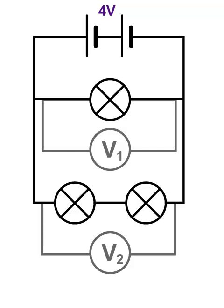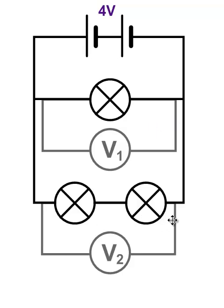We're going to have a look at potential difference in parallel circuits. This is a parallel circuit with two branches: a branch with one bulb and a branch with two bulbs. You'll see that there's also a couple of voltmeters attached in this circuit — a voltmeter measuring the potential difference across the middle branch and another one measuring the potential difference across the lower branch.